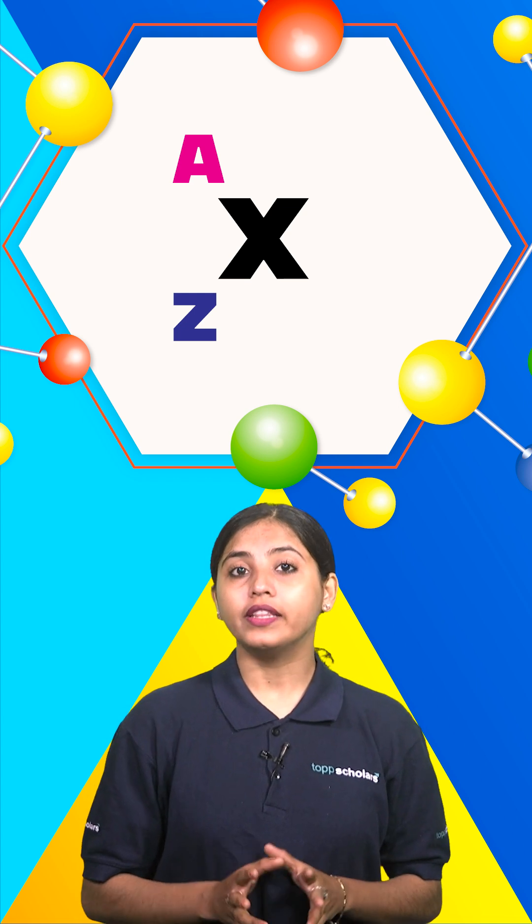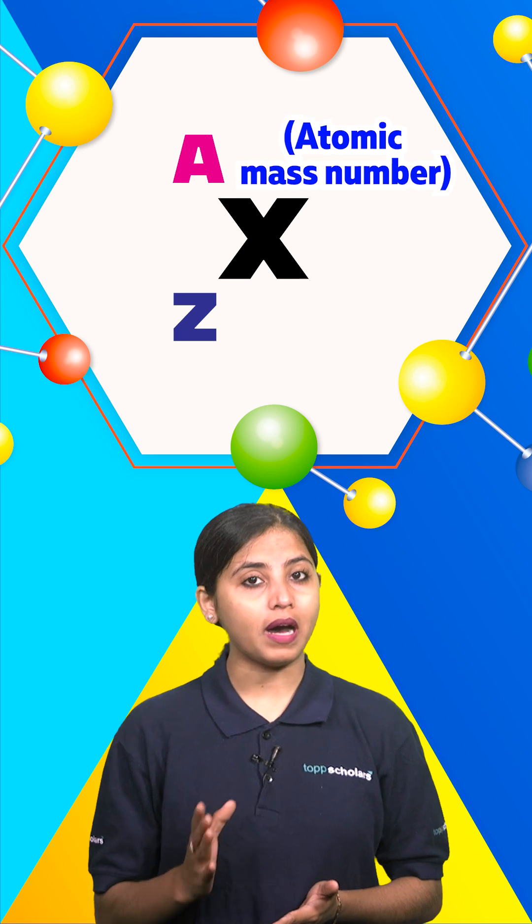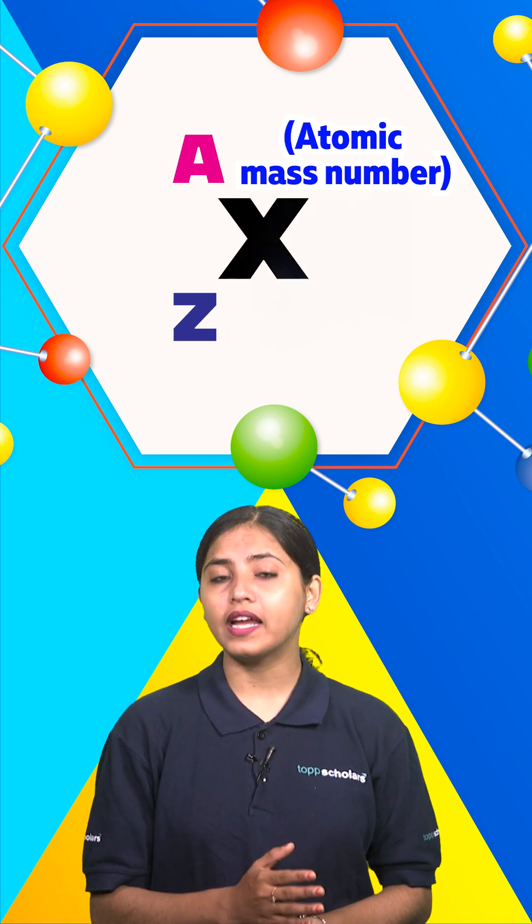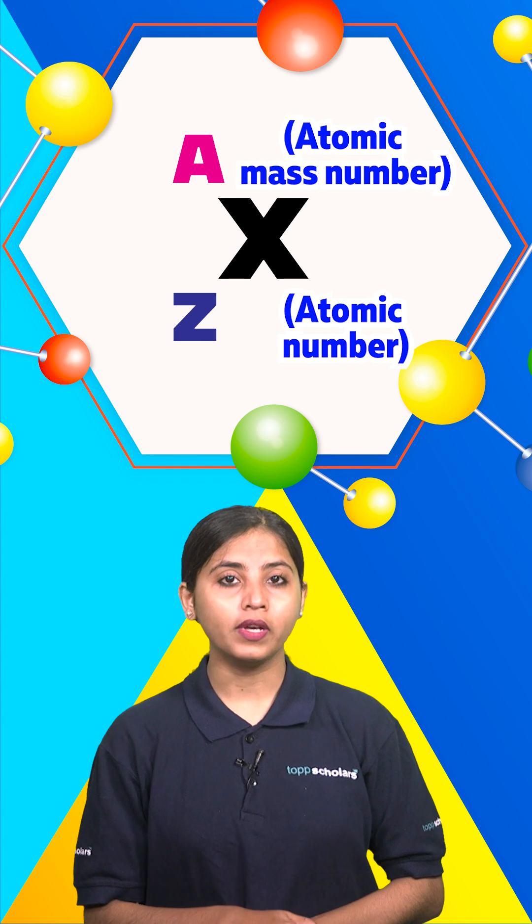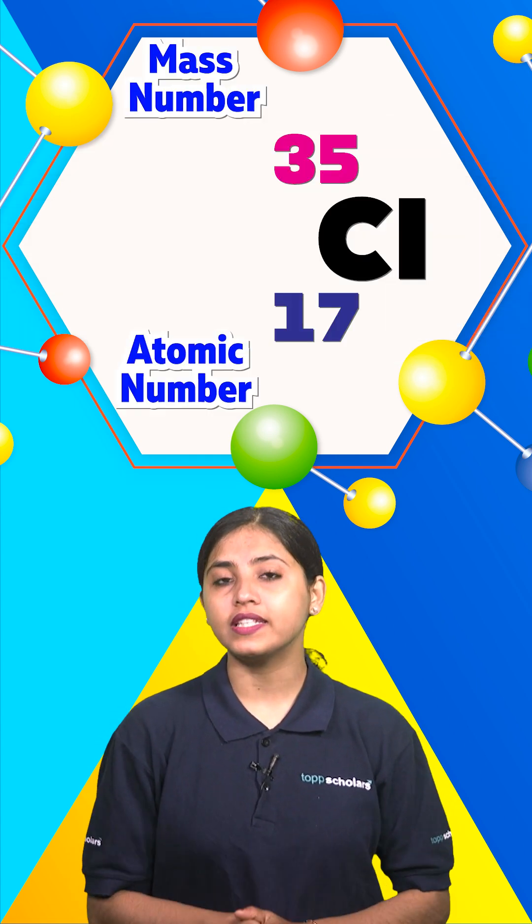Let's memorize the notation here. A is the atomic mass number denoted at the top X and Z is the atomic number at the foot of X. So here 35 is the mass number and 17 is the atomic number.